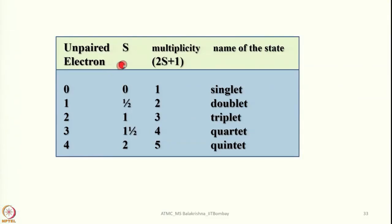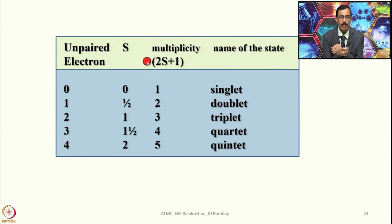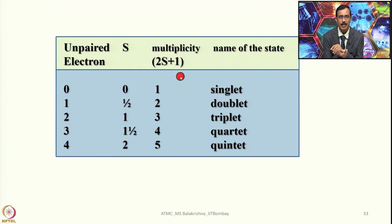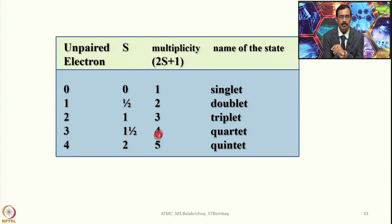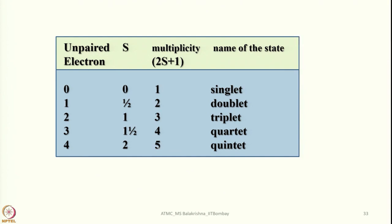Let us look into this table on spin multiplicity, that is the spin angular quantum number 2S+1. When we have 0 electrons, 2S+1 becomes 1 — this is called singlet. When we have 1 electron, S equals 1/2, so 2S+1 becomes 2, called doublet. With 2 unpaired electrons it is 3, called triplet. With 3 unpaired electrons S equals 3/2, multiplicity is 4, called quartet. With 4 unpaired electrons, multiplicity is 5, called quintet. Remember: S is the sum of individual s values, then compute 2S+1.